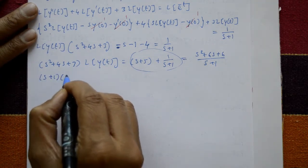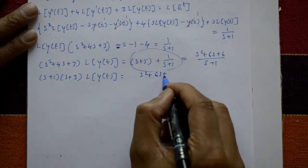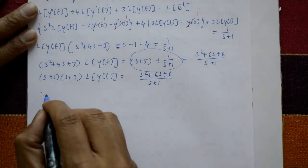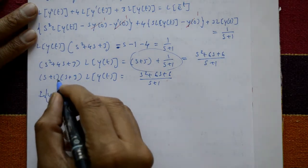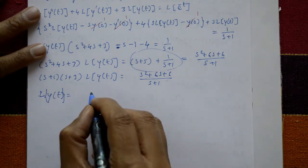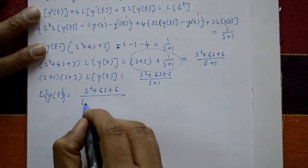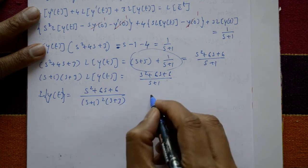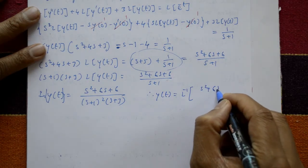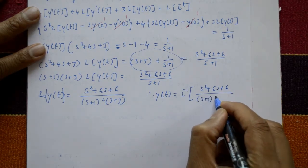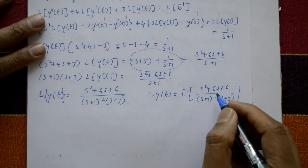Now s squared plus 4s plus 3 factors as s plus 1 into s plus 3. So Laplace of y of t is equal to s squared plus 6s plus 6 divided by s plus 1 whole squared into s plus 3. Therefore y of t equals the inverse Laplace of s squared plus 6s plus 6 divided by s plus 1 whole squared into s plus 3. We solve this by using partial fractions.